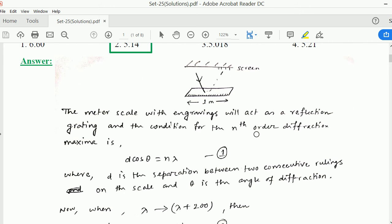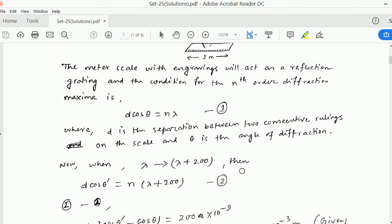The meter scale with engravings will act as a reflection grating and the condition for the Nth order diffraction maxima in case of grating is given by this equation: D cos theta equals N lambda, where N has integral values and D is the separation between two consecutive rulings on the scale.